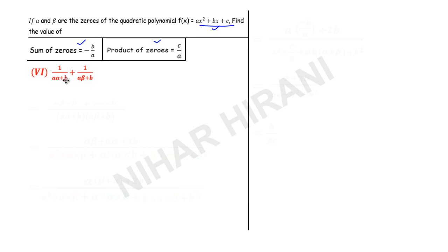Now here I have denominator a alpha plus b, a beta plus b, so I will take LCM. This one will be my LCM. So here I will multiply numerator by a beta plus b, so this will be a beta plus b.